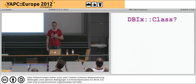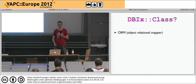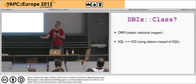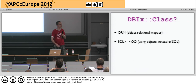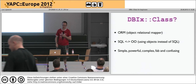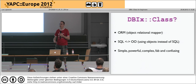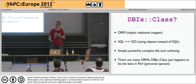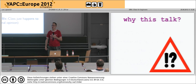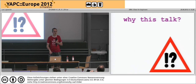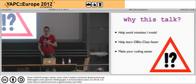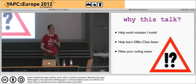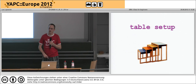So what is DBIx::Class? Well it's an object relational mapper. You might ask, what does that mean? It translates between SQL and objects, so instead of having to write reams and reams of SQL statements you can deal with your database tables as if they are actually objects. It's simple, it's powerful, it's complex, it's fabulous, and it's confusing all at the same time. There are other ORMs out there, but DBIx::Class is pretty much the best as far as most people are concerned. Hopefully this talk will help you avoid the mistakes I made when first learning it, help you learn it faster, and make your code easier to read and write.